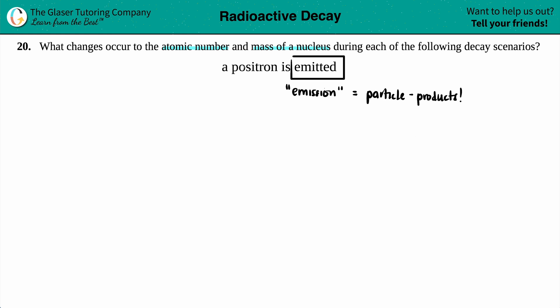So in this case, we are producing a positron. Now a positron is just an anti-electron. So we have electrons and then we have anti-electrons, which are positrons. And we know that that particle is going to be in the product side because it's undergoing emission.